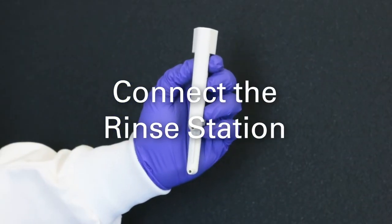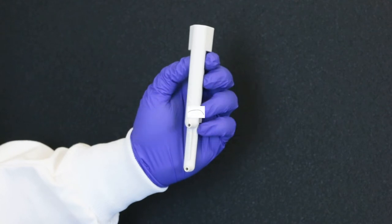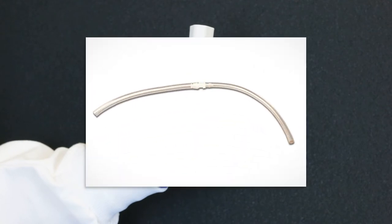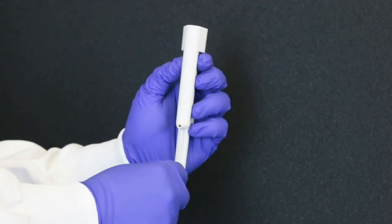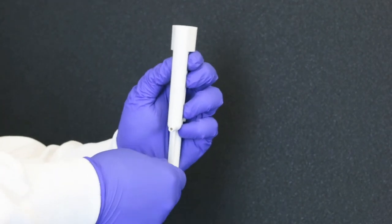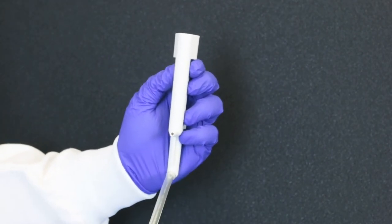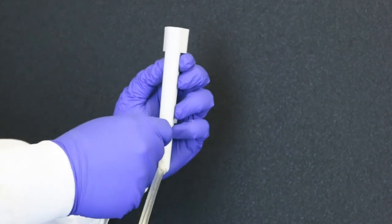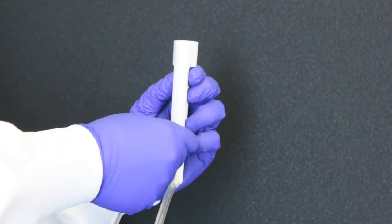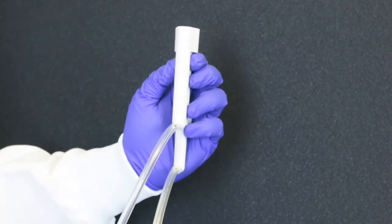Now connect the rinse station. Locate the short piece of tubing with an adapter in the middle. Connect the large end to the lower inlet fitting on the rinse station. Connect the waste tubing to the upper outlet fitting. The tubing should completely cover the barb of both fittings.